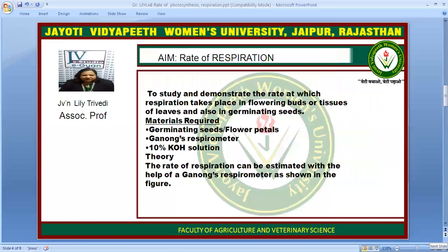Now let's come to the second part of the experiment: measuring the rate of respiration. Instead of flowering buds or tissues, we are using germinating seeds, as these germinating seeds respire fast. The requirement is germinating seeds or flower petals. The instrument used is Ganong's Respirometer, and we use a 10% KOH solution.